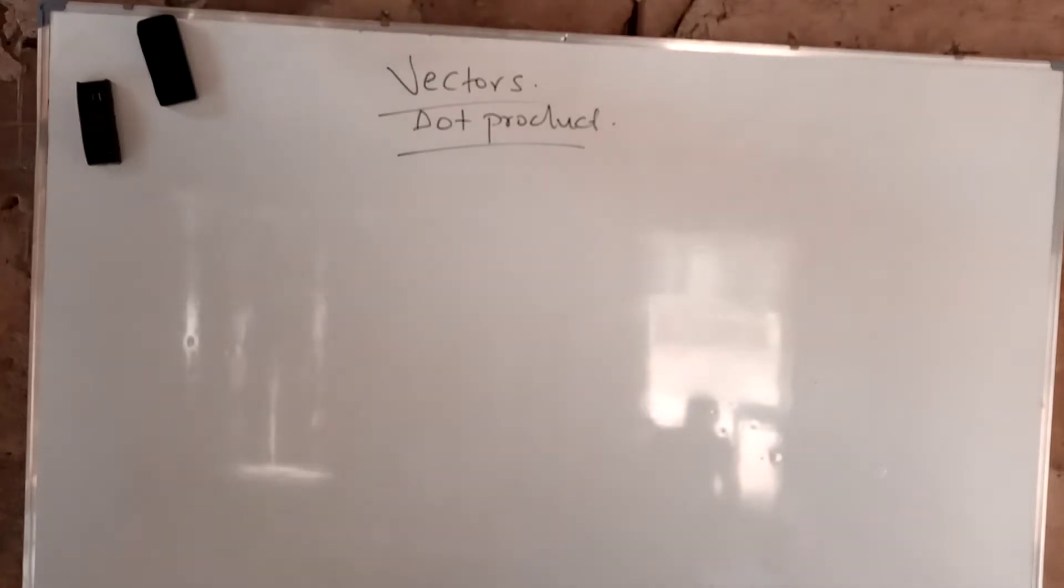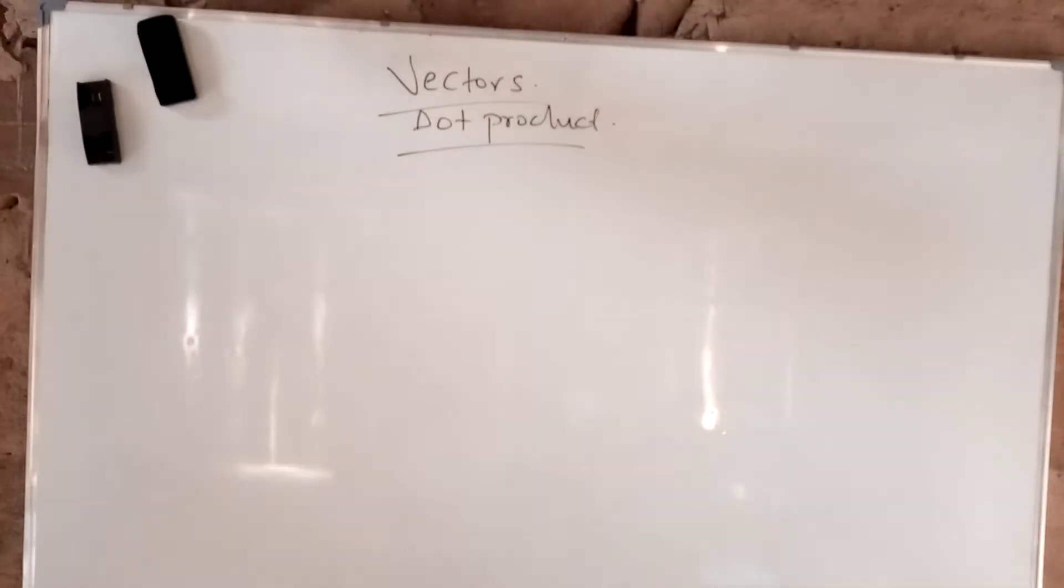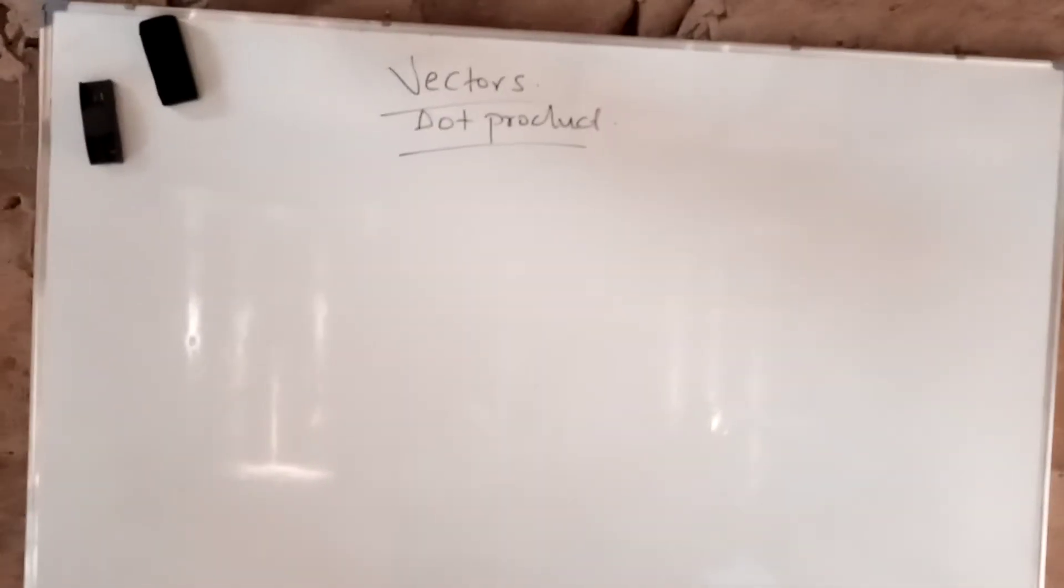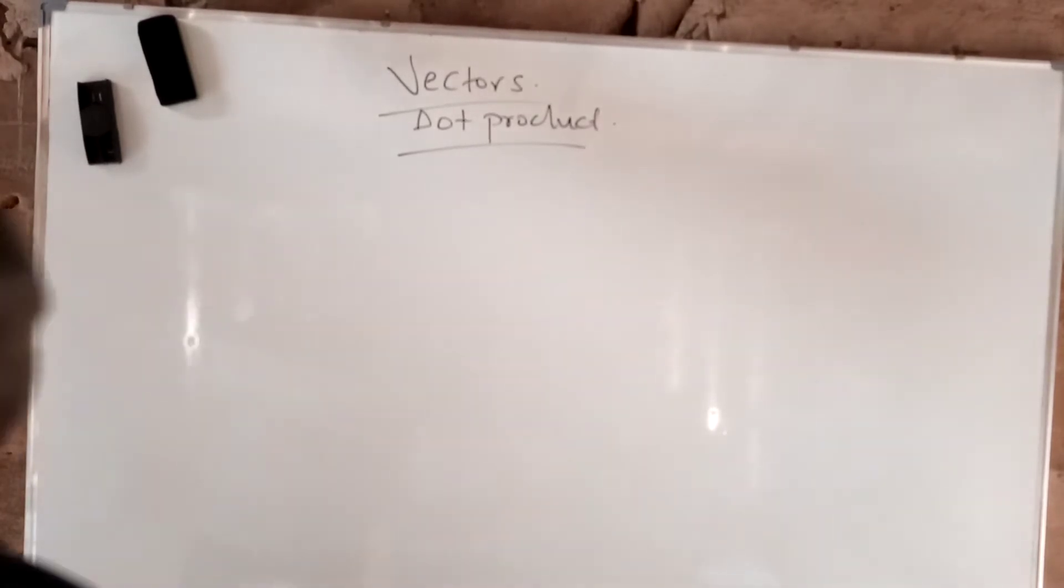Welcome. We are still in vector product, and under vector product we'll be talking about dot product. Let's go. Dot product is almost the same thing as multiplication, but there's one or two things we need to know.